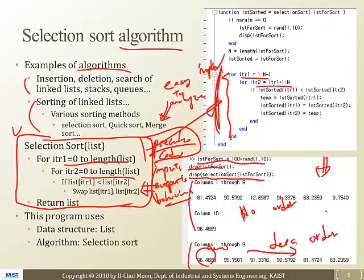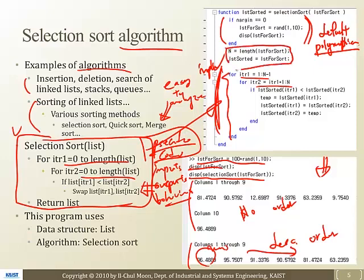So how does this selection sort work? The first part is the default part — this is called polymorphism. If you don't know about polymorphism, I'd advise you to go back to that week to understand what this means. Then this section is just setting up some variables, and this is the key part.